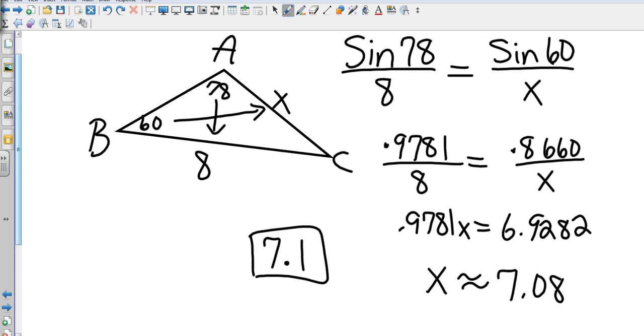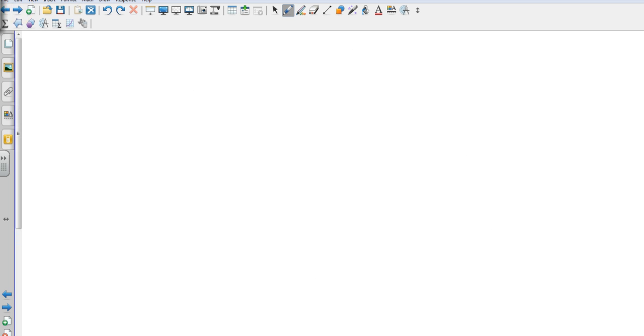I've got a triangle that is not a right triangle. I've been given two angles and one side, so I use the Law of Sines on that one. Now, obviously our topic is the Law of Sines and Cosines, so the next one is the Law of Cosines.